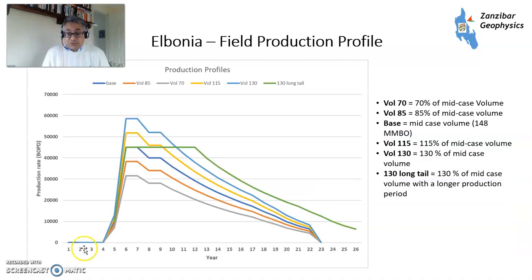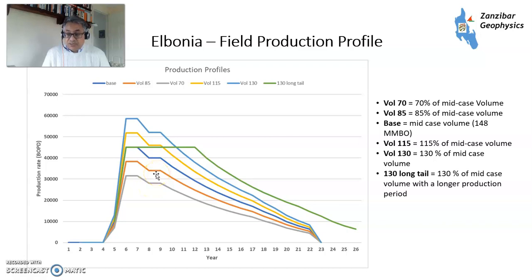This is a production profile showing the production rate in barrels of oil per day across different cases. Volume 70 is 70% of mid-case volume, 85 is 85% of mid-case volume, then mid-case volume, then 115%, 150%, 130%, and 130% with a long tail where you cap the production rate.